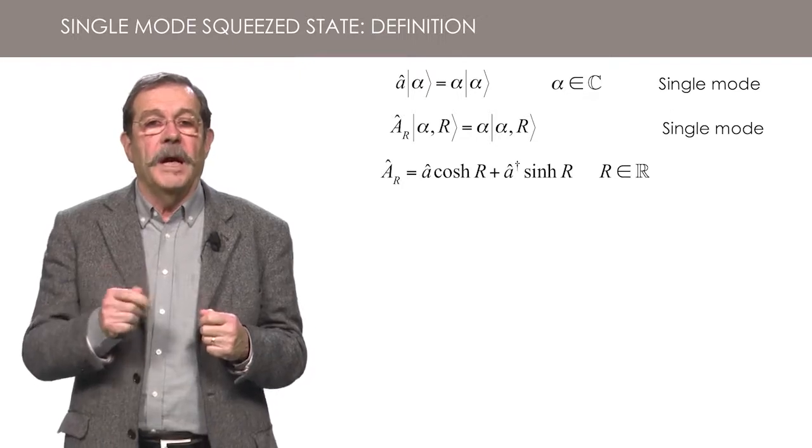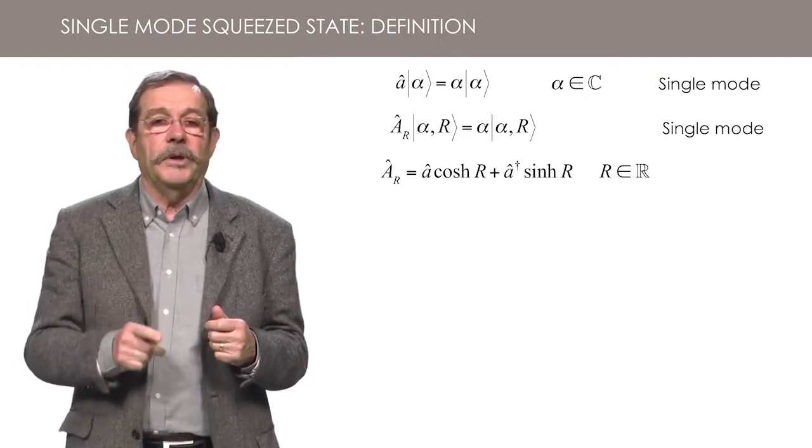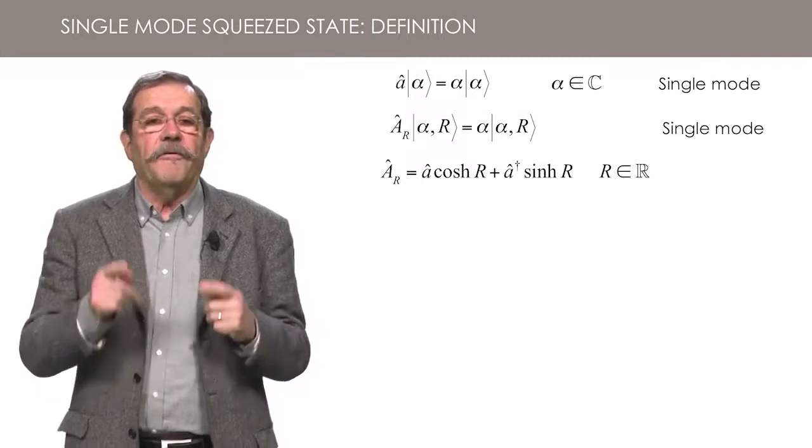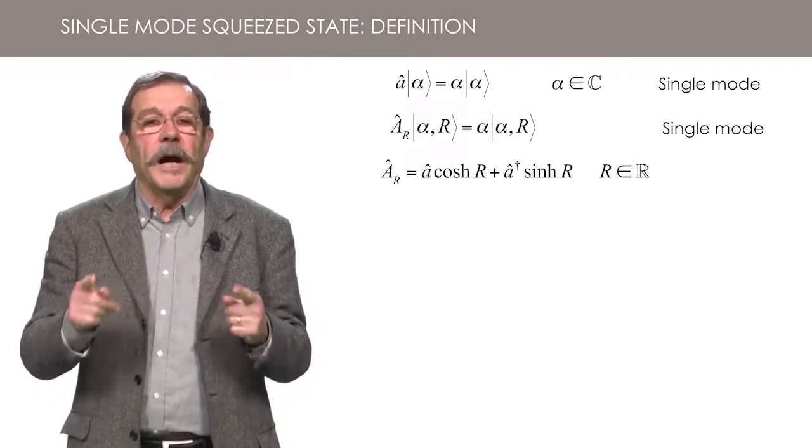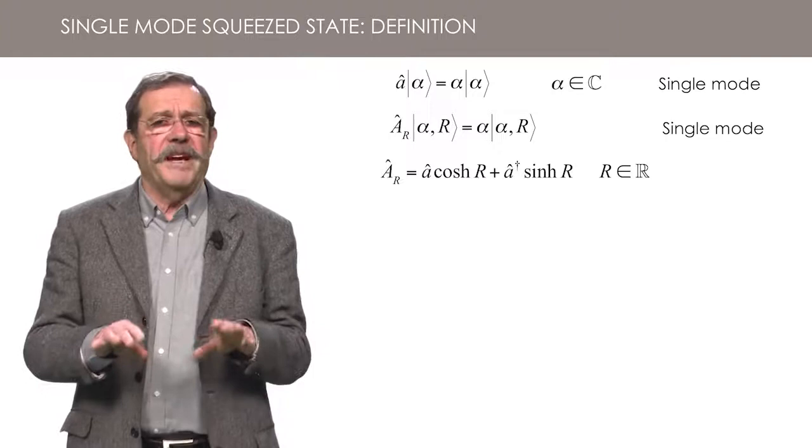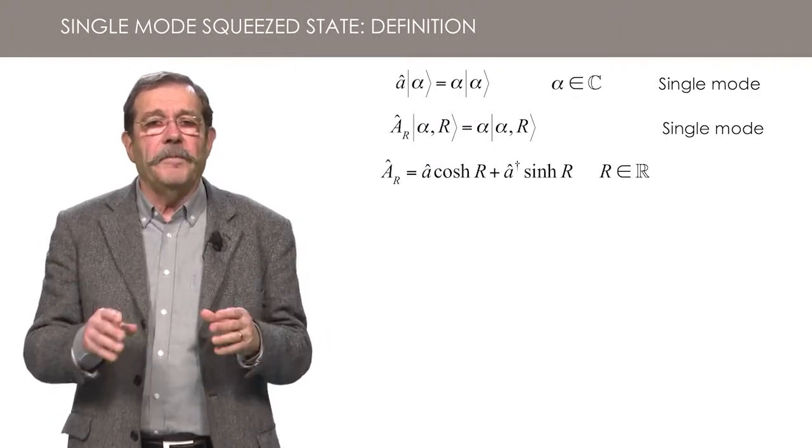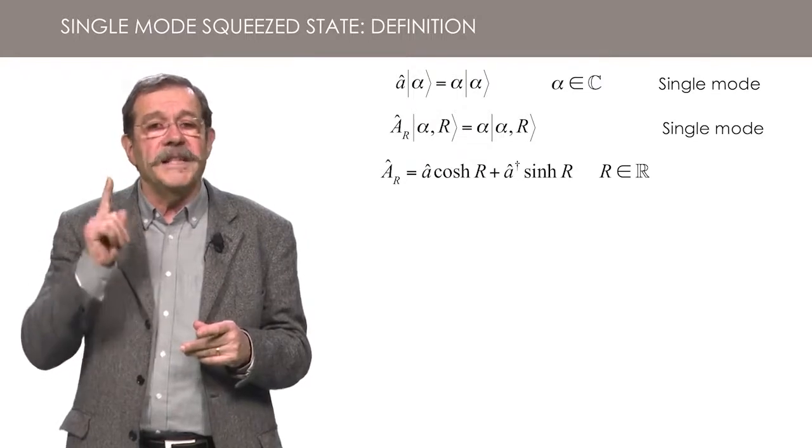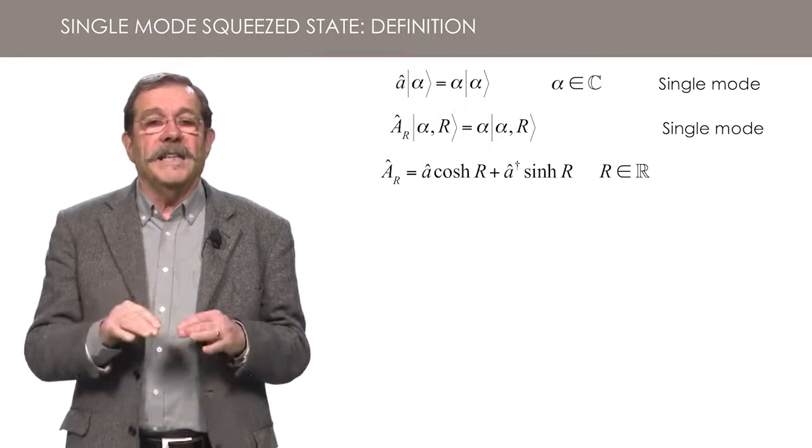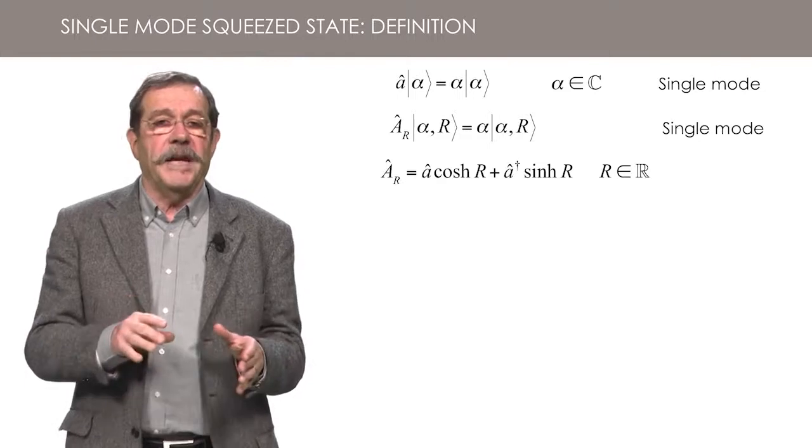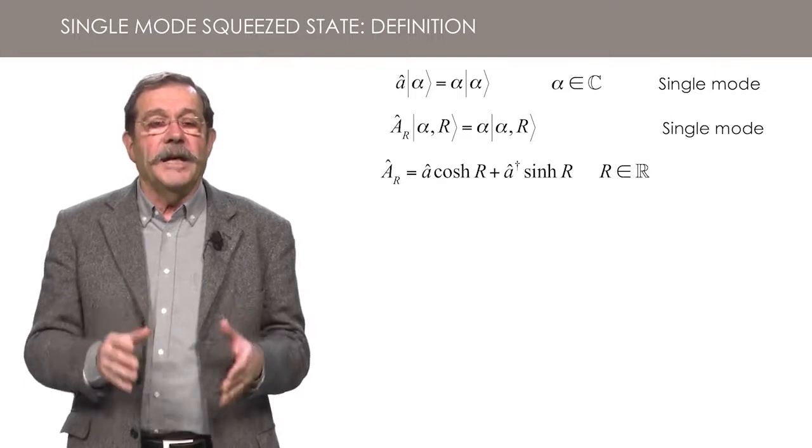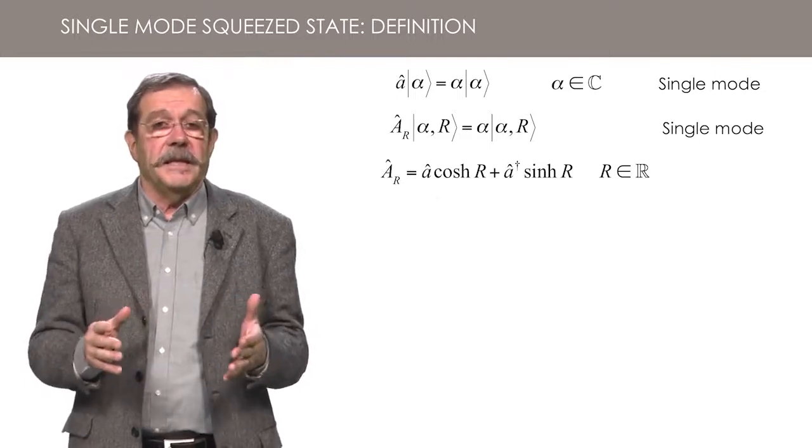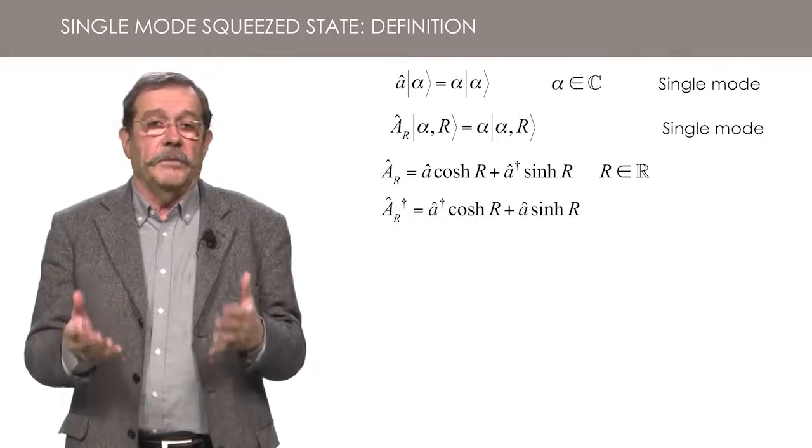The coefficients are the hyperbolic cosine and sine of a real number capital R. To simplify the writing, I have dropped the subscript L, but you must remember that we are in a single mode. As the usual annihilation operator A, AR is not Hermitian since it is different from its Hermitian conjugate.